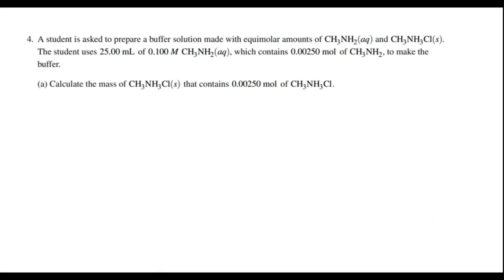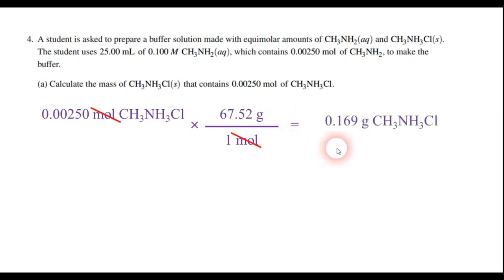Question 4 starts by asking us about a buffer solution that's made with what looks to be methylamine and then the conjugate acid of the methylamine. It tells us that we have 25 milliliters of the base, it gives us the concentration, and it even tells us how many moles it has. So part A just says calculate the mass of the compound here that contains 0.00250 moles of that compound. So all we have to do is take the 0.00250 moles of the compound and convert it to grams. So that means one mole on the bottom, and when you add this up, I get 67.52 grams in a mole of that. We cancel out moles, and I get an answer of 0.169 grams of the conjugate acid compound. So that's our answer. Give yourself one point for that.